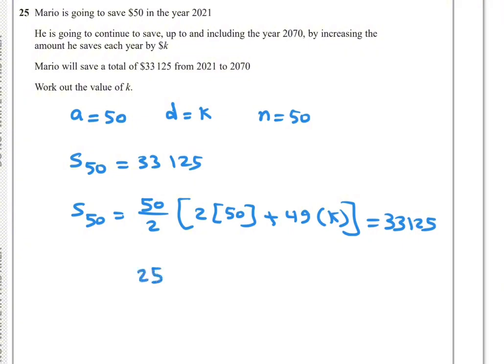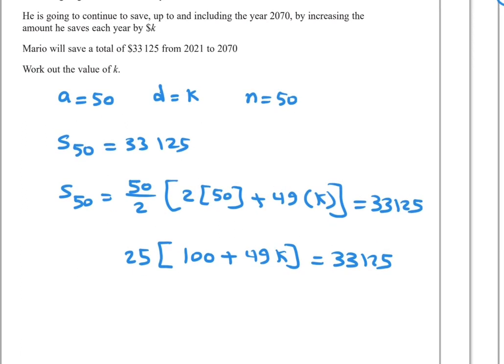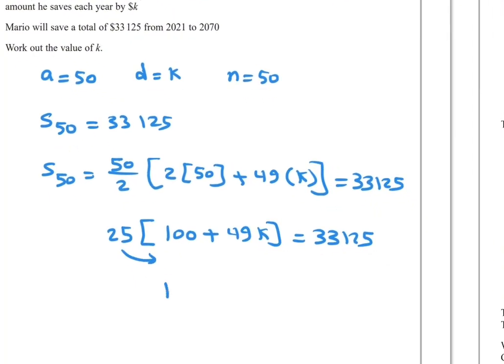So 25 into 100 plus 49k equals 33,125. Now divide by 25, or transpose 25 to the other side by division. So 100 plus 49k equals 33,125 divided by 25, which equals 1,325.